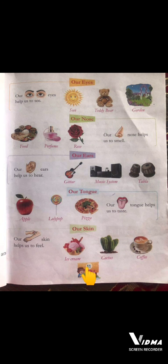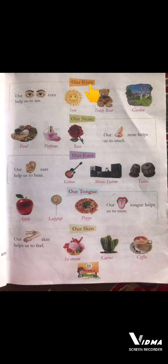We will read only the first 3 sense organs. First is: O-U-R, Our, E-Y-E-S, Eyes. Eyes means humari aankhe. Let's start: Our Eyes.